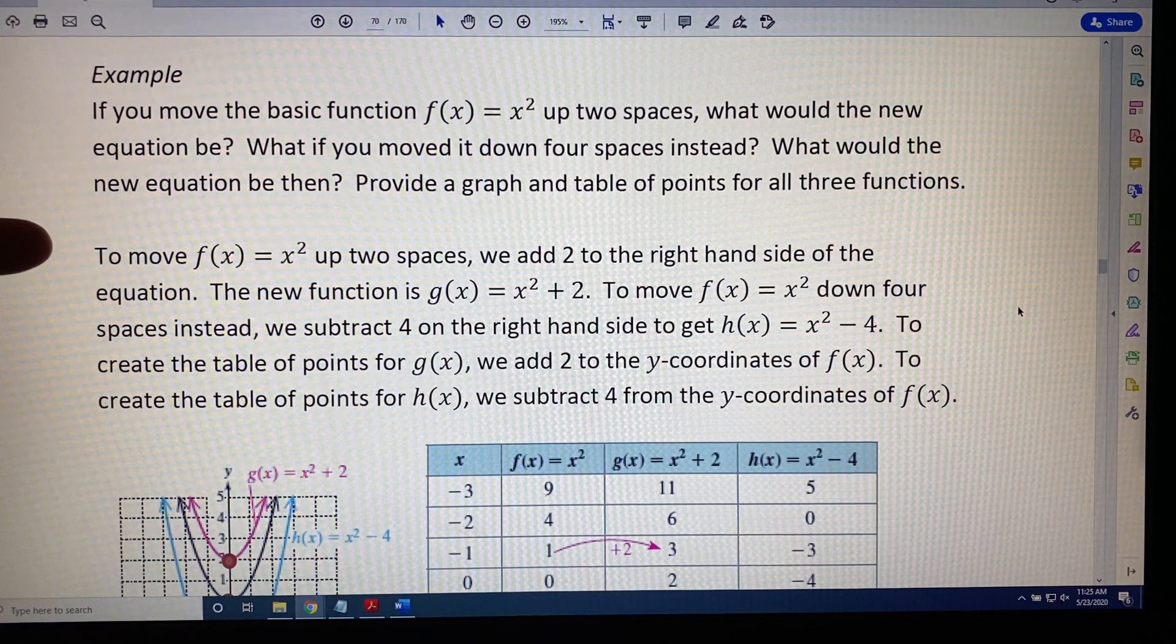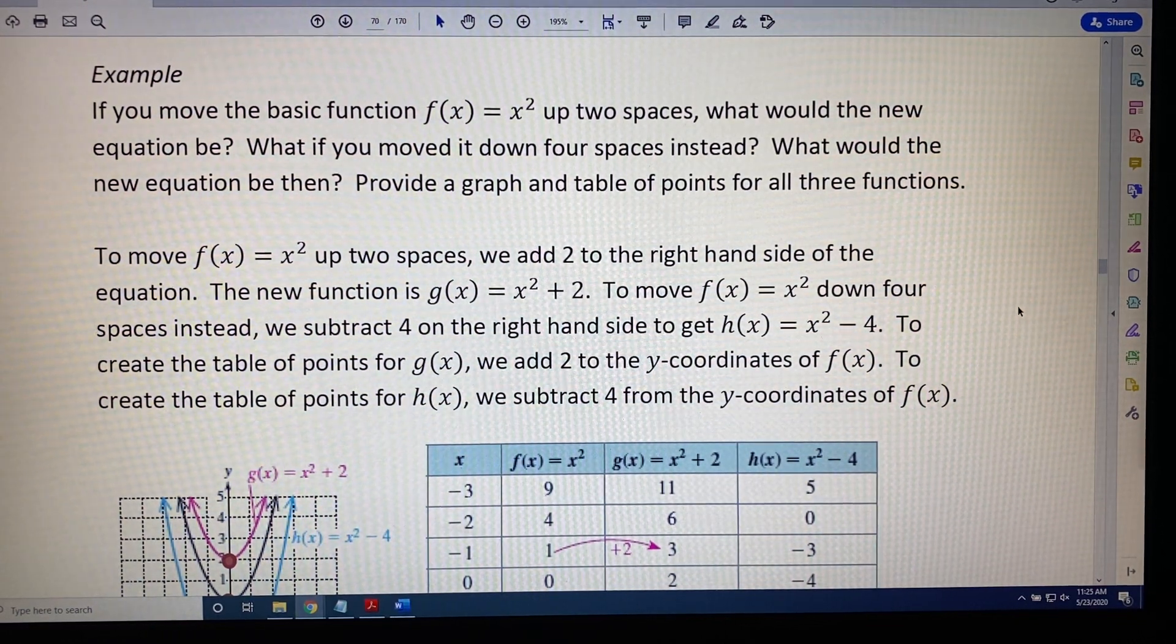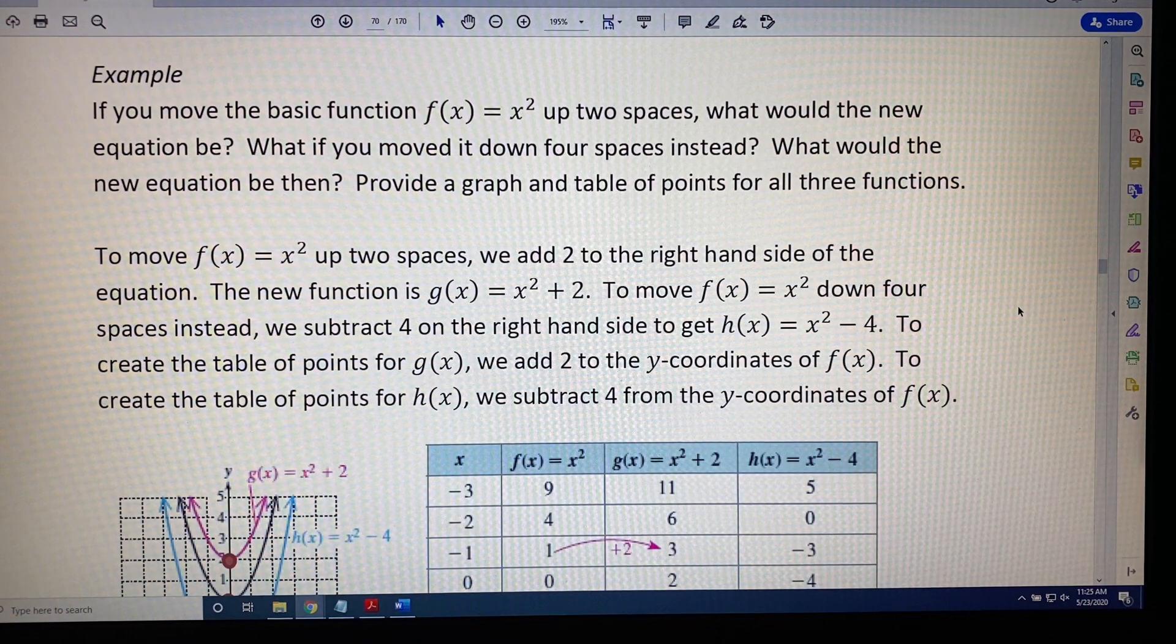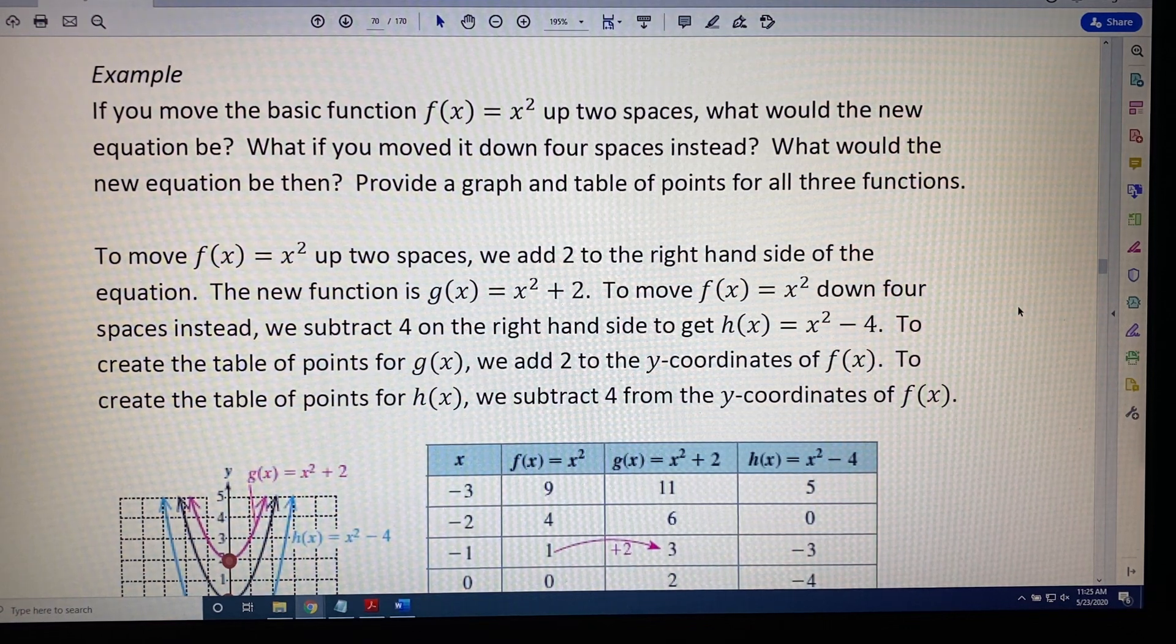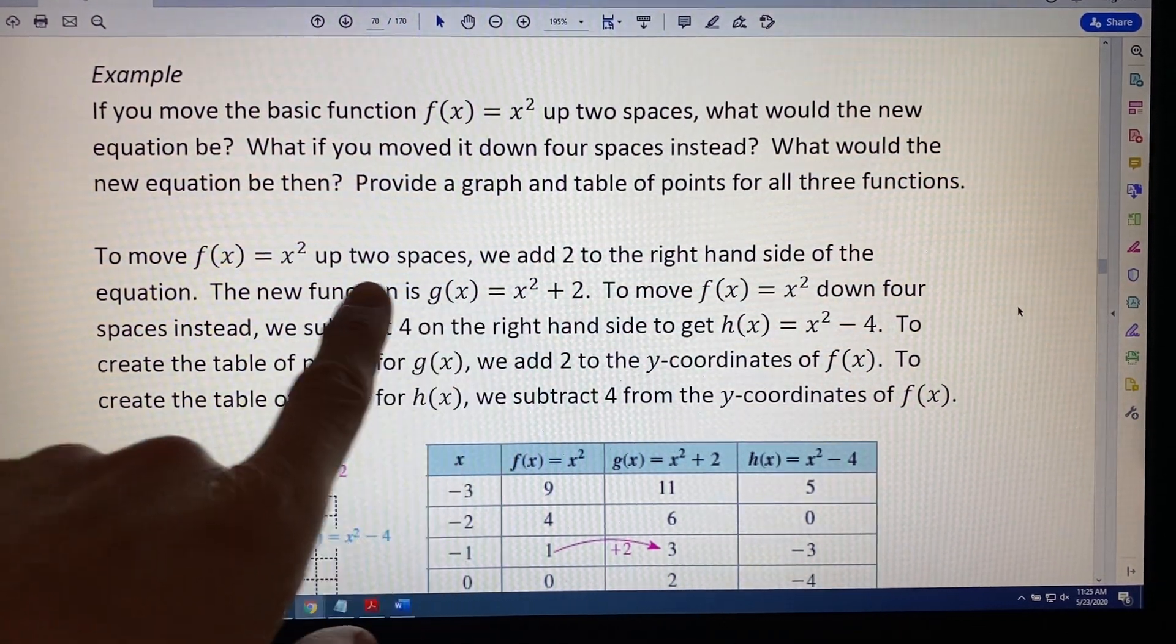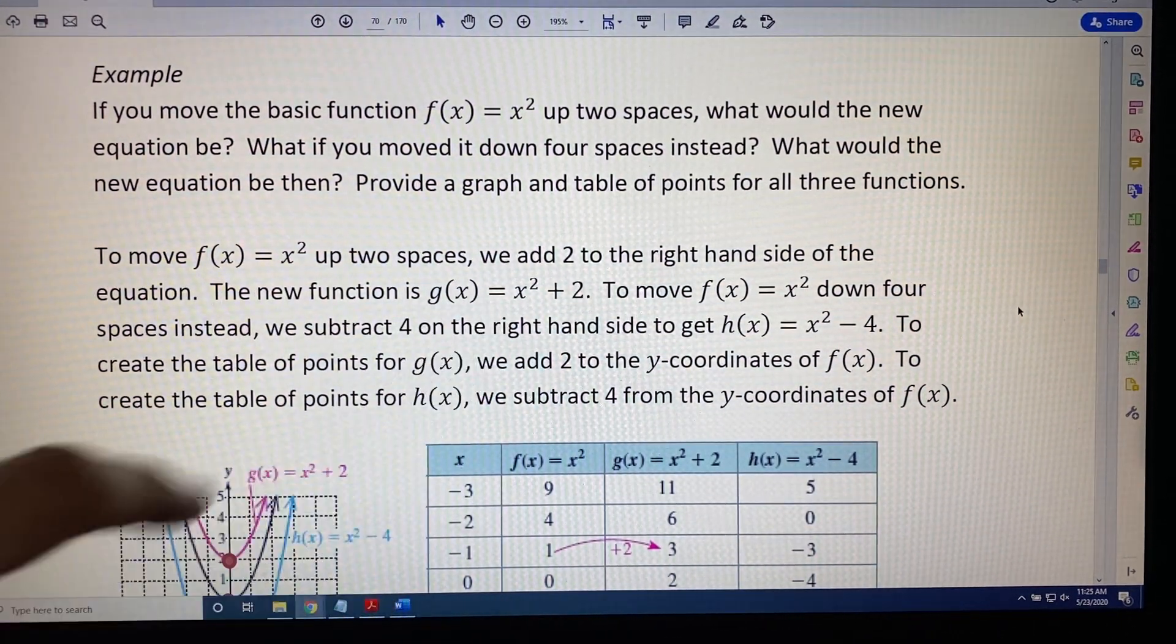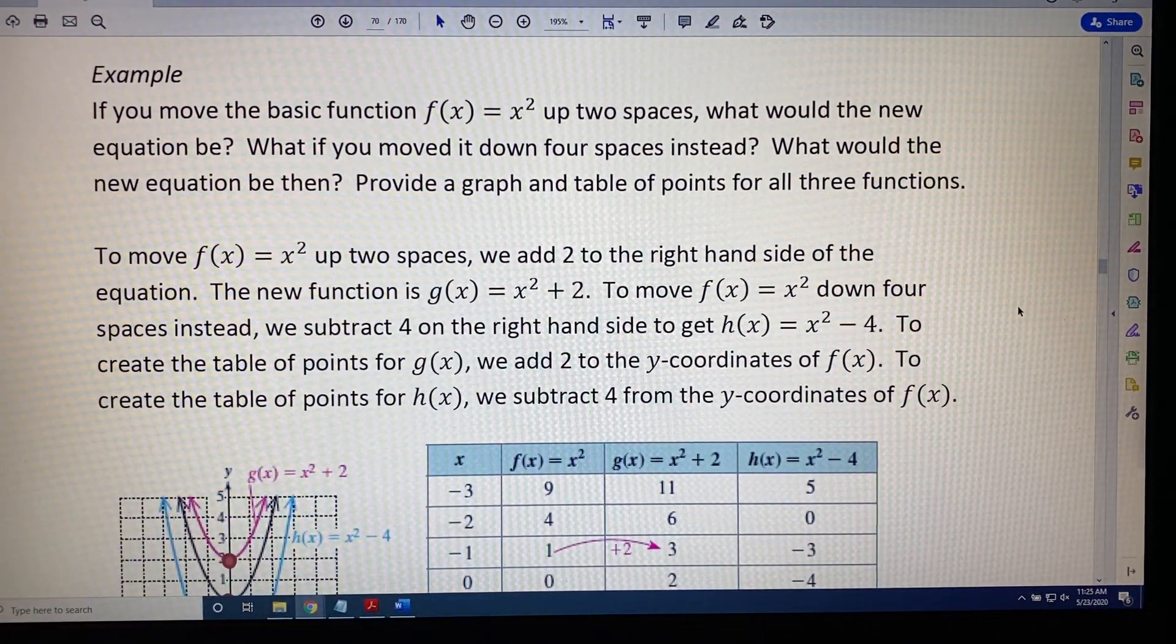To move f(x) = x² up two spaces, we follow the rule stated above and add 2 to the right-hand side of the equation. We would get x² + 2. And because that's different, it's a different function, we're giving it a new name. Instead of f(x), now we're going to call it g(x).